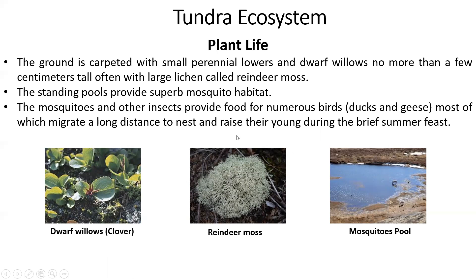The pools of water in tundra provide good conditions for mosquito growth. Other insects serve as food for birds such as ducks and geese. These birds are migratory — they travel long distances, come to tundra during the warm season for a short while, raise their young here, and then leave.